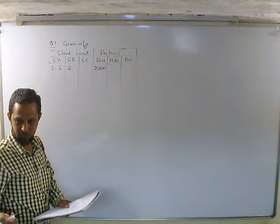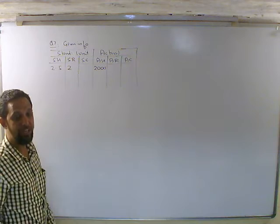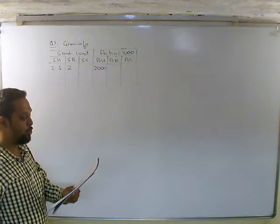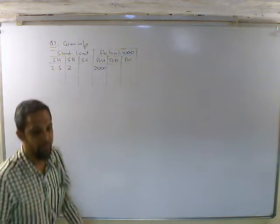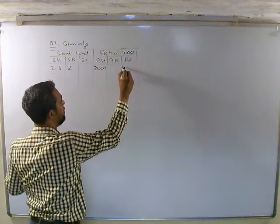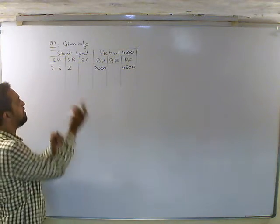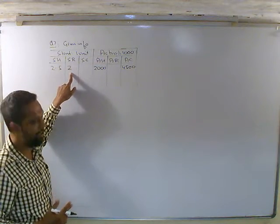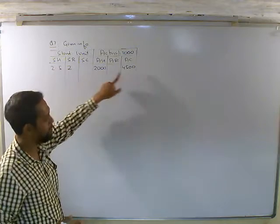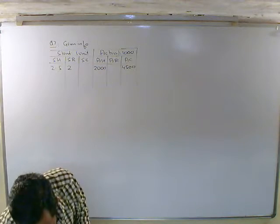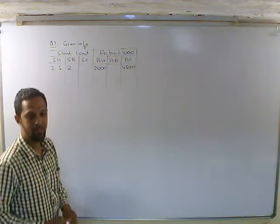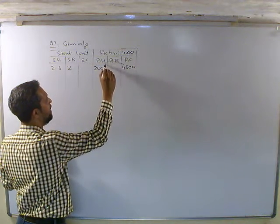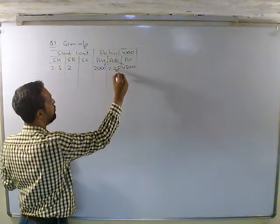Actual output 1,000 units — यहाँ लिखना है 1,000 units. Actual wages paid ₹4,500 — यह actual cost में जाएगा. Rate और rate दोनों close to each other होंगे. Actual rate निकालने के लिए: 4,500 divided by 2,000 = 2.25 — आ गया, very close to each other.